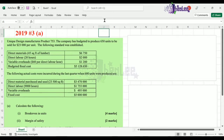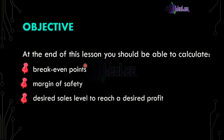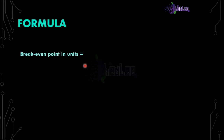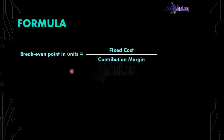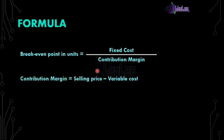We're going to check our formula sheet. Once you're in an exam, ensure that you write your formula. The formula to calculate break-even in units is simply fixed cost divided by contribution margin. But before you can calculate your break-even point in units, you need to determine the contribution margin, which is simply selling price minus variable cost.